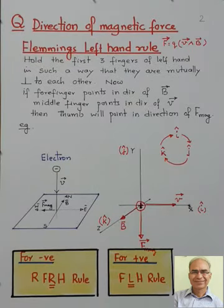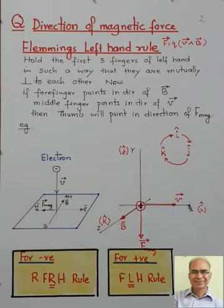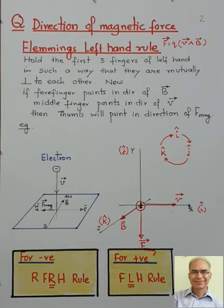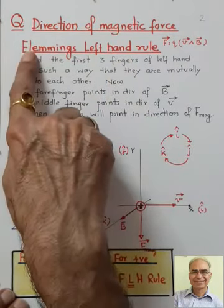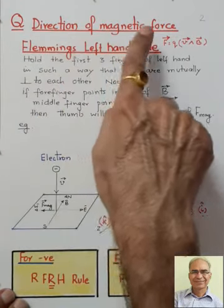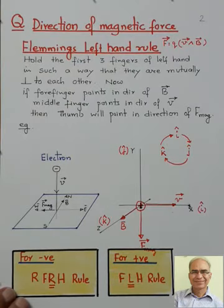So in summary, the force formula is BQV sin theta, and the force is always perpendicular to the plane formed by vectors V and B. The direction of the magnetic force is determined by Fleming's left hand rule.